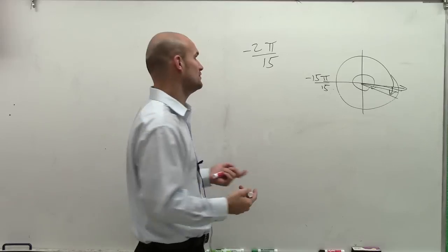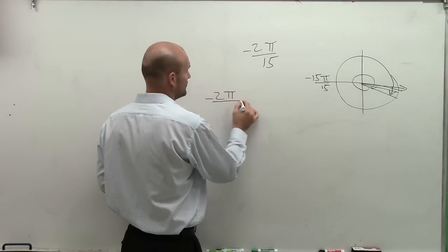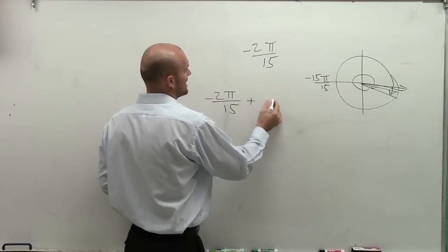2 pi, right? 2 pi would be a revolution. That means to find one coterminal angle, what I could do is I could add 2 pi.